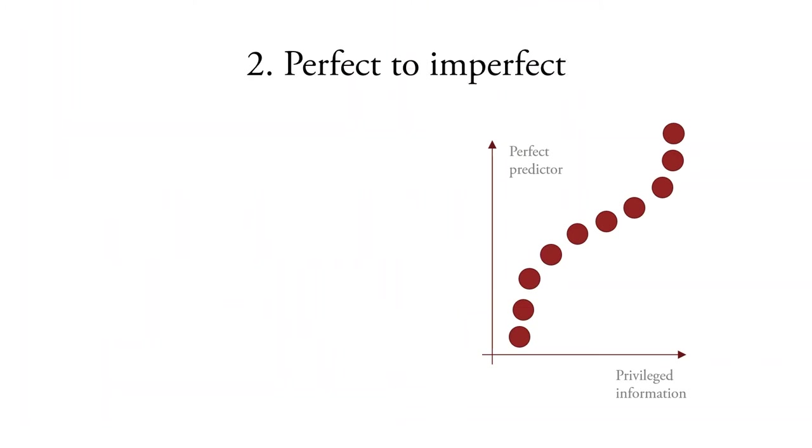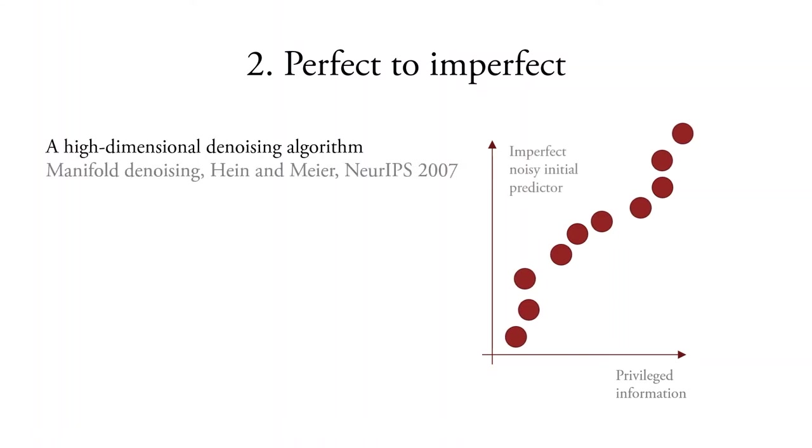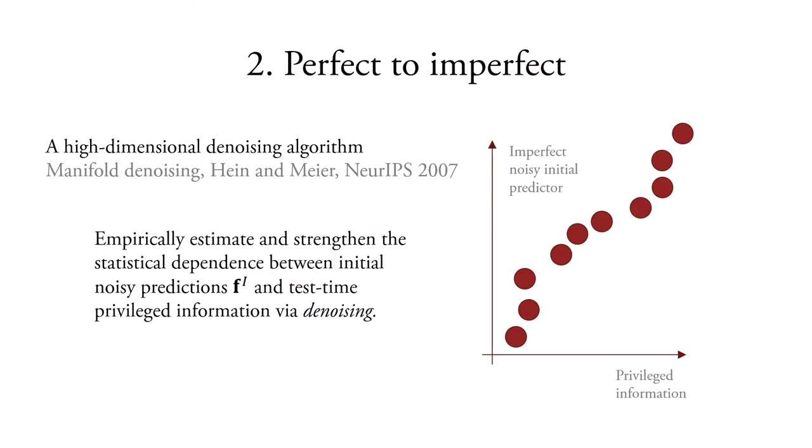We can never observe the perfect predictor at test time because we do not have labels. Instead, we consider the output from our predictor F to be noisy predictions of the true perfect predictor. Then we're going to employ a high-dimensional manifold denoising algorithm. This will empirically estimate and strengthen the statistical dependence between the initial noisy predictor and the test time privileged information via denoising.